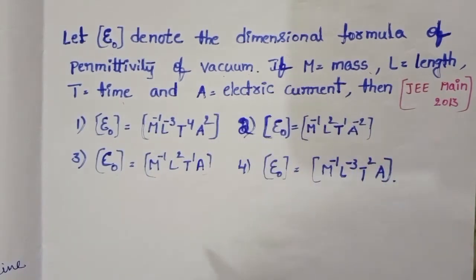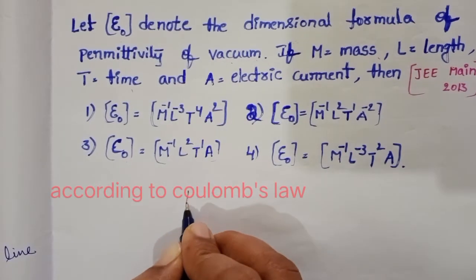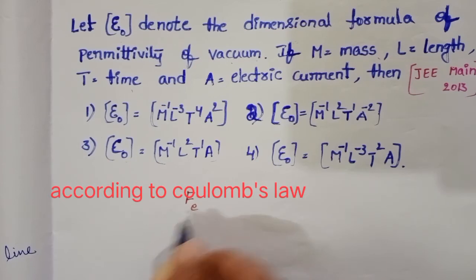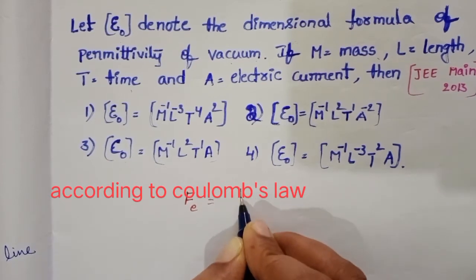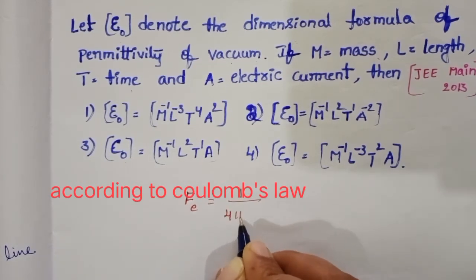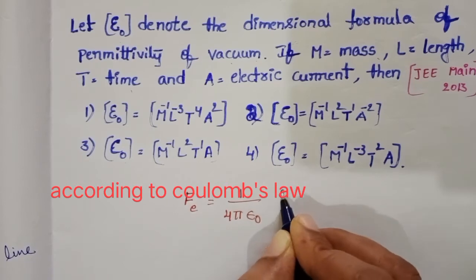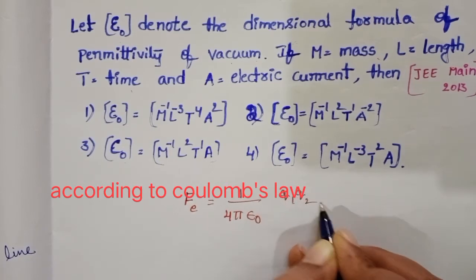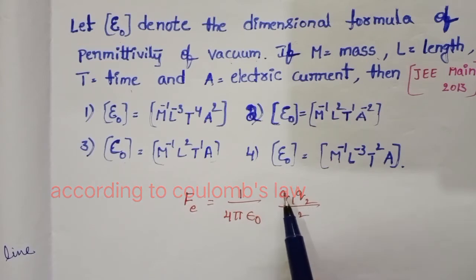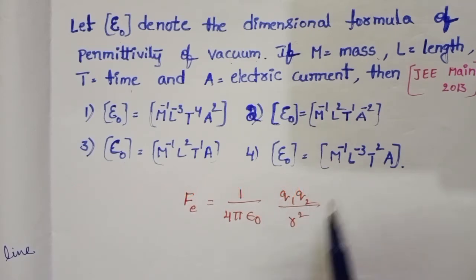T is time, and A is electric current. Take the formula of electrostatic force: F_e = 1/(4πε₀) × Q₁Q₂/R². Where Q₁ and Q₂ are charges,